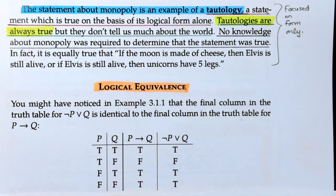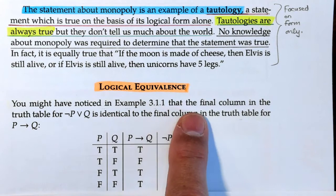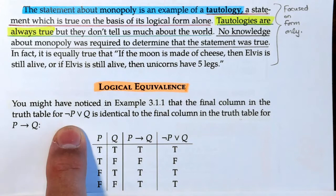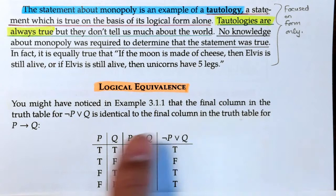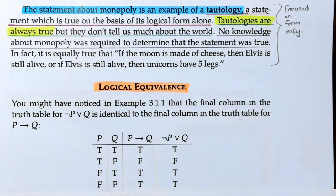So he starts and he talks about that by looking at this truth table here. He said you might have noticed in the example we did right in the beginning that the final column of the truth table, not P or Q, is identical to the final column in the truth table, if P then Q.